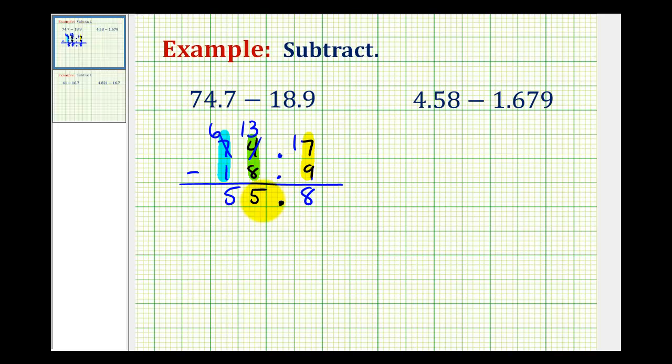We'll do all the other problems in a similar way. We'll first write it vertically, lining up the corresponding place values. So here we'll have four point five eight minus one point six seven nine.